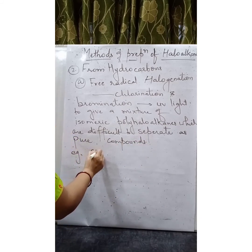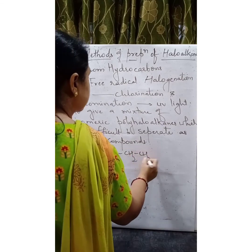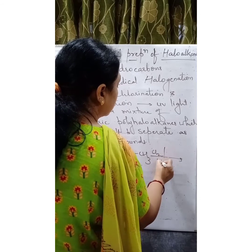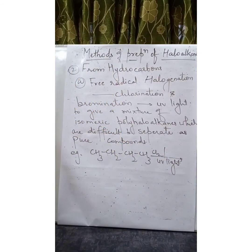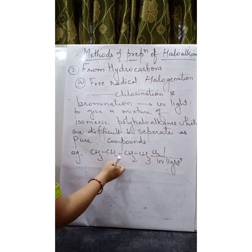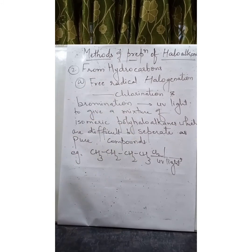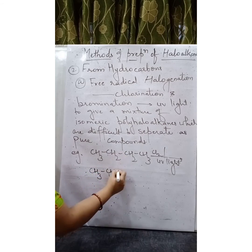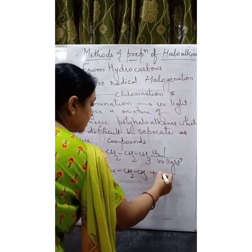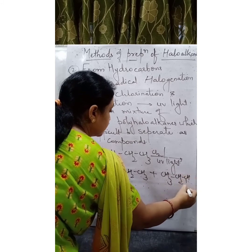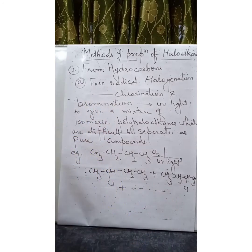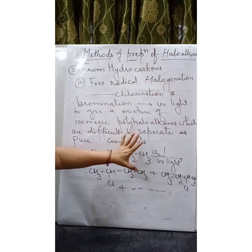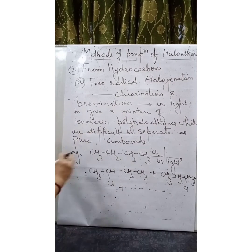For example, taking CH3CH2CH2CH3 (butane) and treating it with chlorine in presence of UV light — chlorine is able to replace all hydrogens. This is a chain reaction: once started, it does not stop until a single replaceable hydrogen remains, giving a mixture of products. For instance, CH3CH2CH2CH2Cl plus CH3CH2CHClCH3 and so on, continuing until no replaceable hydrogen is left. This method is normally not preferred because of the complex mixture formed.